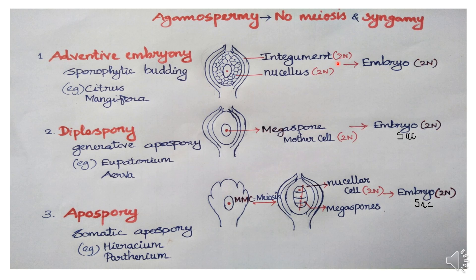In this case, the nucellus cells are diploid — double set of chromosomes. So the embryo produced is a diploid embryo. Earlier the embryo was haploid in nature, but in this case the embryo is diploid. For example, Citrus species and Mangifera (mango).